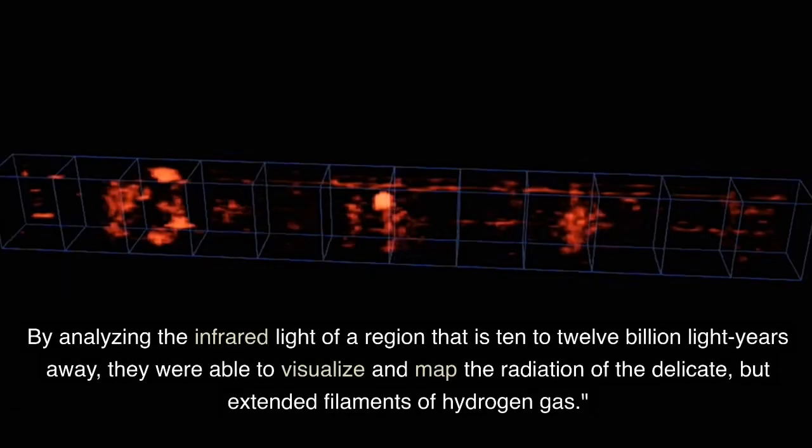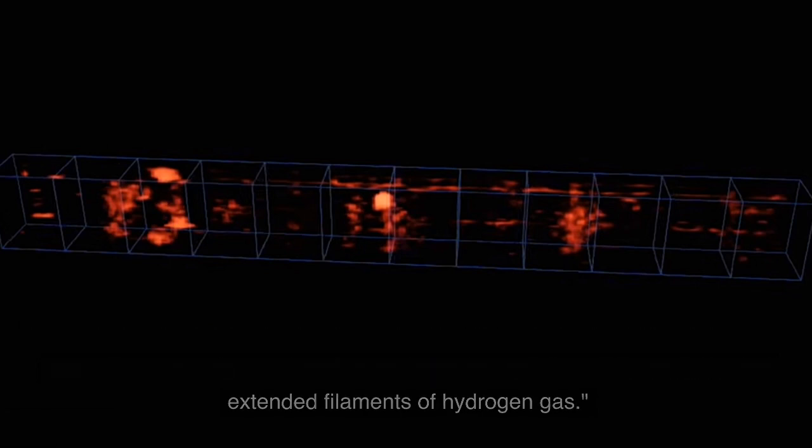By analyzing the infrared light of a region that is 10 to 12 billion light-years away, they were able to visualize and map the radiation of the delicate but extended filaments of hydrogen gas.